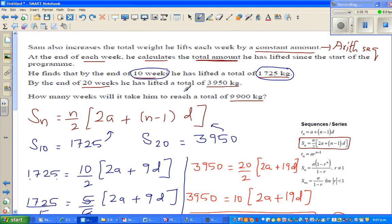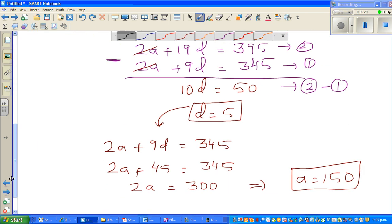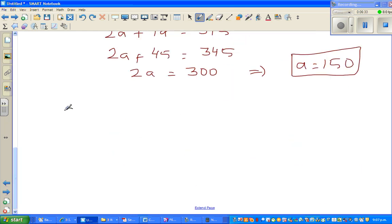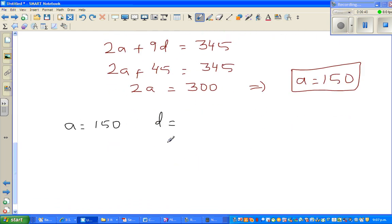Now what's the question? How many weeks does it take for him to reach 9900 kg? Let me write: a is 150, d is 5. The question is when S_n is 9900, what is your n? After how many weeks does this become 9900? Let me write the formula again: S_n is n over 2 times 2a plus n minus 1 times d.